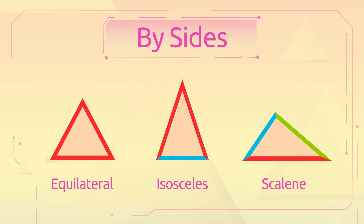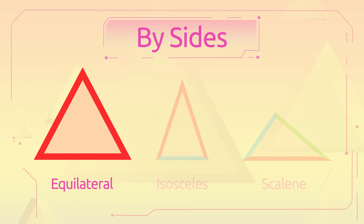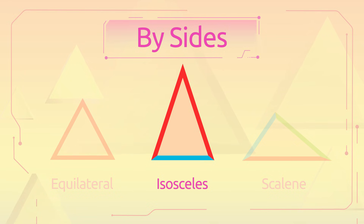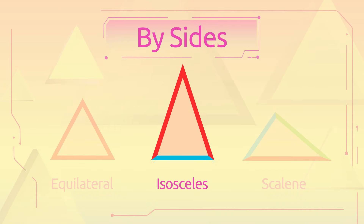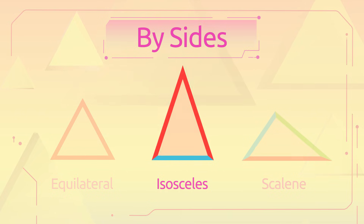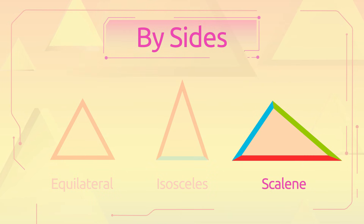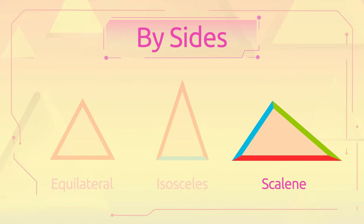A triangle with three equal sides is called an equilateral triangle. A triangle with two equal sides is called an isosceles triangle. And the triangle whose sides are all different is called a scalene triangle.